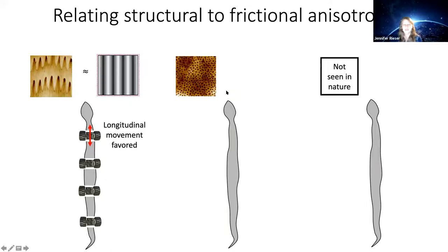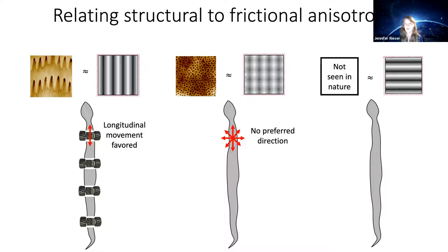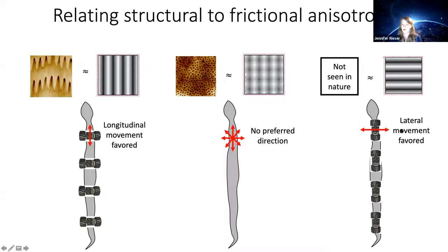Where there isn't any directionally dependent structure, we hypothesize that this is associated with an isotropic interaction with the substrate — no preferred direction of movement, everything equally easy. The third situation, not yet seen in nature, would be where material could more easily flow across the body rather than along it, with wheels oriented so rolling is easier across the body.